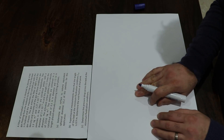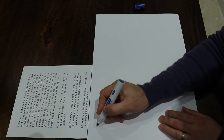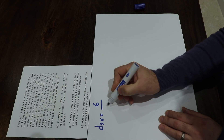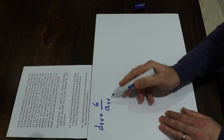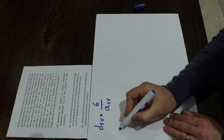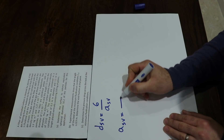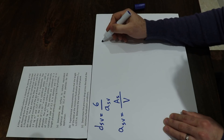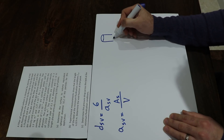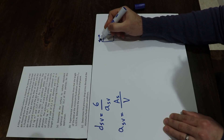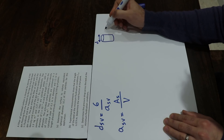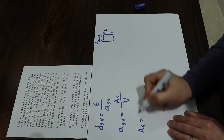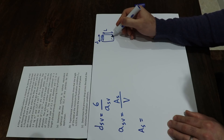For the first part, the surface-to-volume equivalent spherical diameter D_SV equals 6 divided by A_SV, the specific surface area. To calculate A_SV you need the surface area of each particle divided by its volume. The particles are cylindrical, with diameter D and length L.